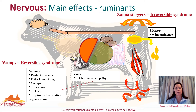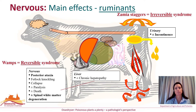Cattle affected by zamia staggers develop an irregular goose-stepping gait and often knuckle at the fetlocks. The syndrome is irreversible and animals may develop substantial wasting of the hindquarters, leading to paralysis, with death occurring because they cannot access food and water. Wamps was named after the sound made by affected cattle hitting the ground after falling over. They tend to lose weight and develop a sideways lurching, fall easily and have difficulty rising. Unlike zamia staggers, this poisoning appears reversible over several weeks if animals are provided with supportive care.